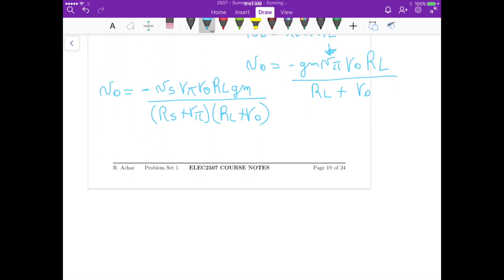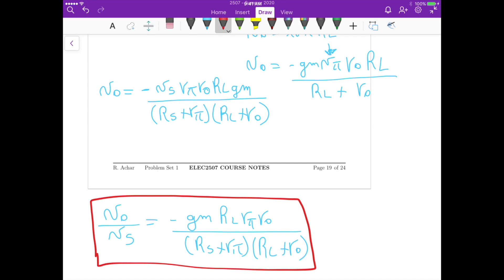If we isolate Vout over Vs, which is what we want, it's minus GM RL Rpi R0 divided by Rs plus Rpi times RL plus R0. That's the final answer. That's it for this problem.